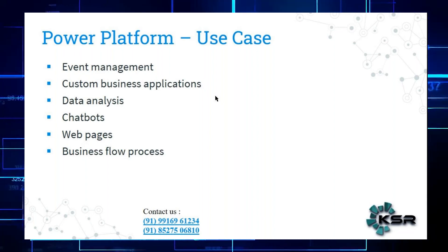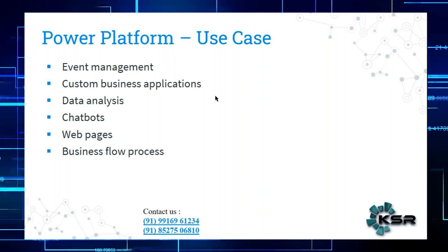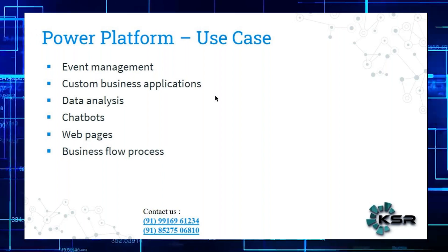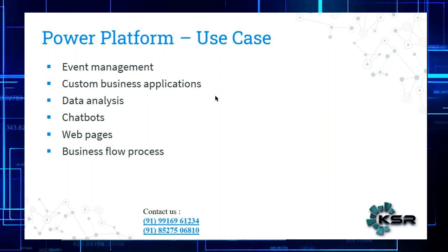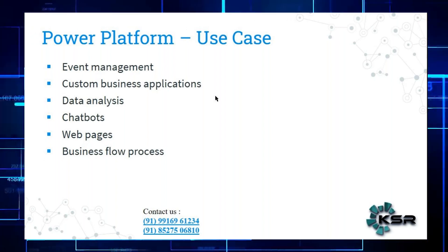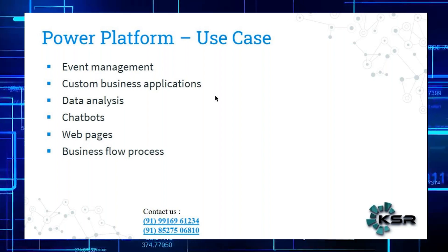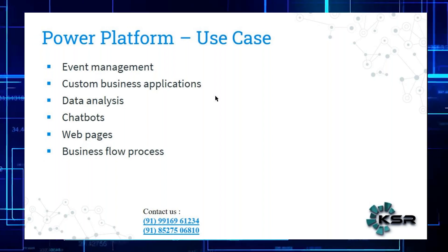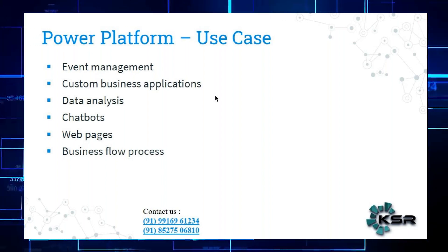Looking at real-time use cases: there is a website application, automation — like mail processes and approvals — and if you raise a ticket, you can close or approve it through a flow or approvals feature. This is business process oriented. We also have data analysis using Power BI, and event management — you can organize everything within your business using a mobile app.